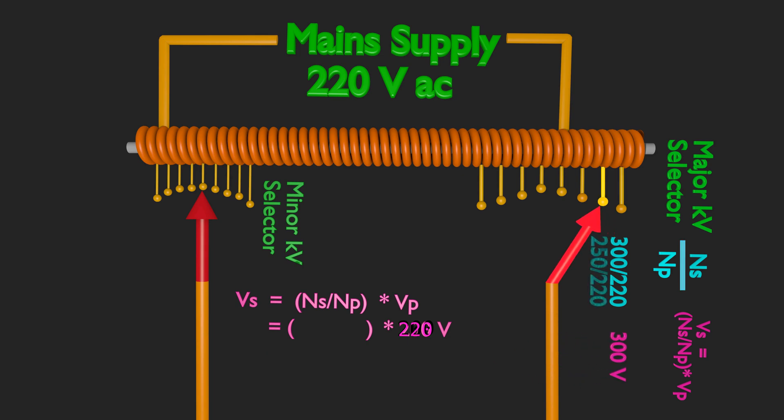The turn ratio will be 250 divided by 220 in this case. After using this value in transformer law, we get a voltage of 250 across secondary. So, we can have different taping to have variable voltage across secondary of an auto transformer.